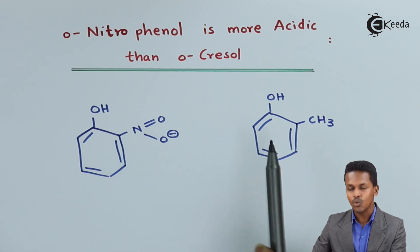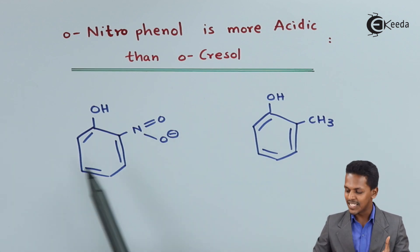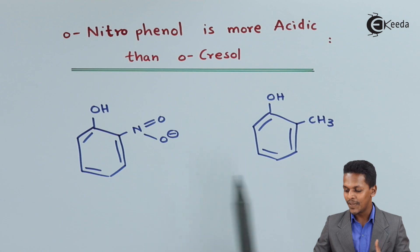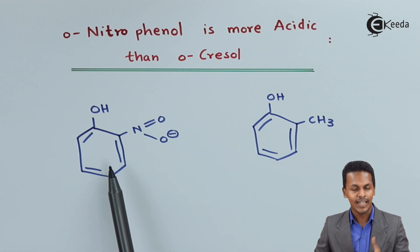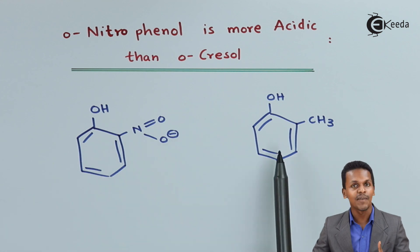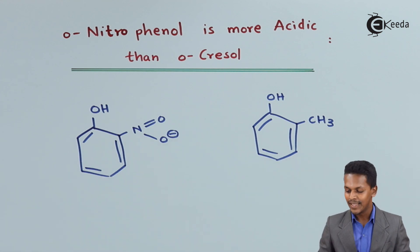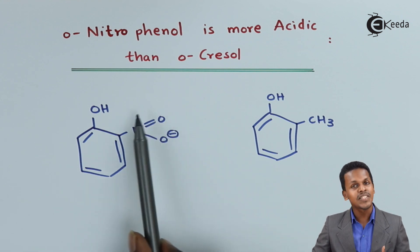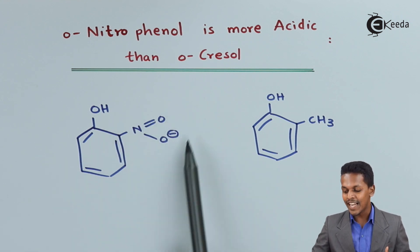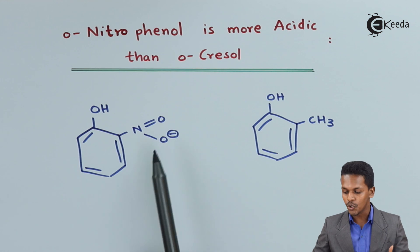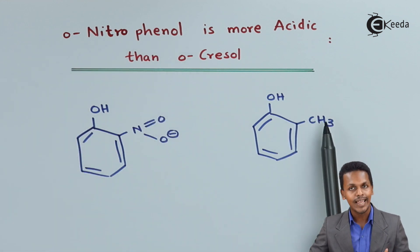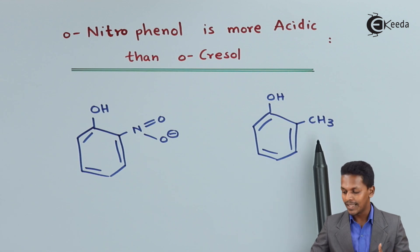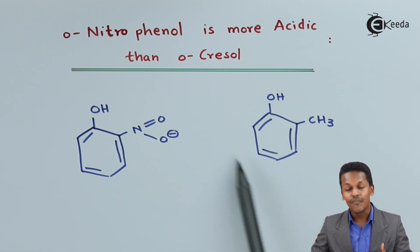These are the two compounds we are comparing, and based on that we have to decide how O-nitrophenol is more acidic compared to O-cresol. This is related to the functional groups — the nitro group is the main functional group in O-nitrophenol, while CH₃ is the group attached to the phenol ring in O-cresol.